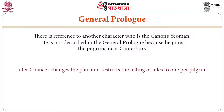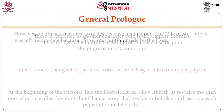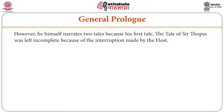Chaucer changes the plan and restricts the telling of tales to one per pilgrim. At the beginning of the Parson's Tale the Host declares that there are no more tales, clarifying that Chaucer now restricts each pilgrim to one tale only. However, Chaucer himself narrates two tales because he first tells the Tale of Sir Thopas, which was left incomplete due to an interruption made by the Host.